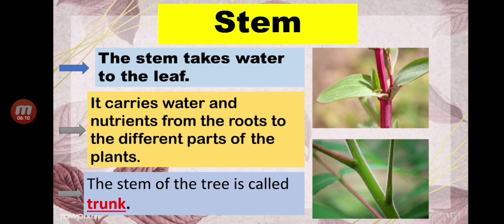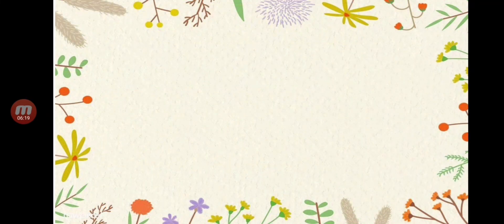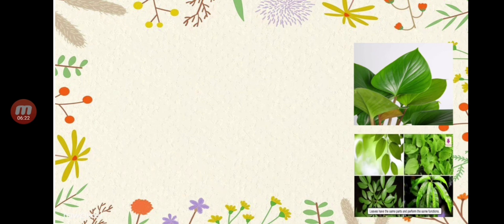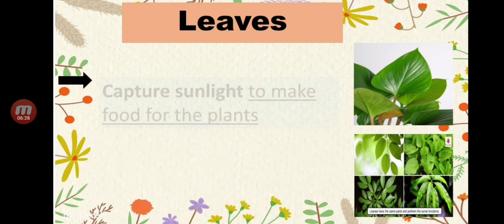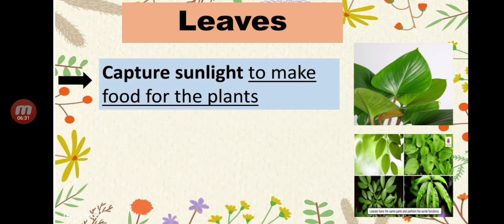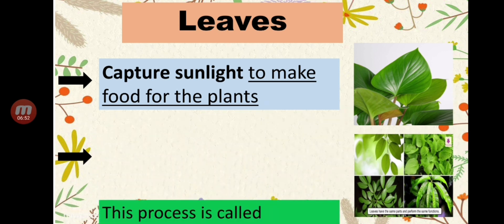Always remember this: the stem of a tree is called a trunk. Don't forget that — the stem of the tree is called a trunk. Now let's proceed to leaves. What is the work of the leaves? Leaves capture sunlight to make food for the plant. Always remember that — leaves capture sunlight to make food for the plant.